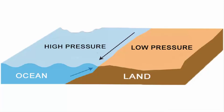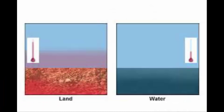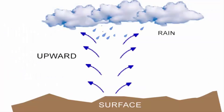Usually, the ocean surface has high pressure and land surface has low pressure. When the cool air over the water moves from the high pressure to the low pressure area — that is, towards land — since land gets heated faster than water, the air over land moves upwards. We learned that during low pressure the air moves up; hence, condensation and precipitation takes place.